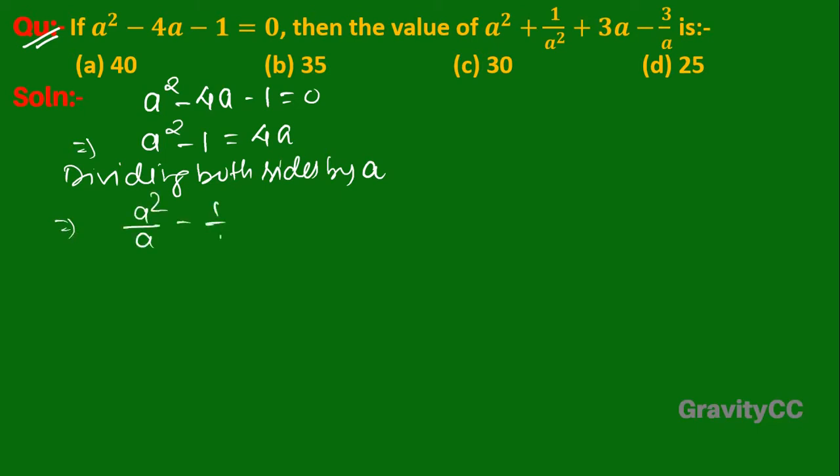Dividing both sides by a: a²/a - 1/a = 4a/a, which cancels to give a - 1/a = 4.